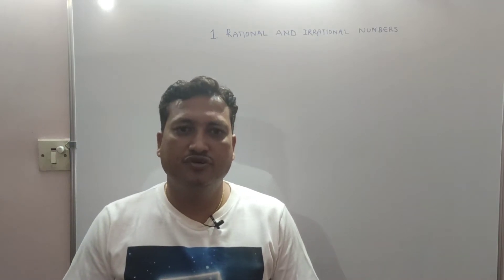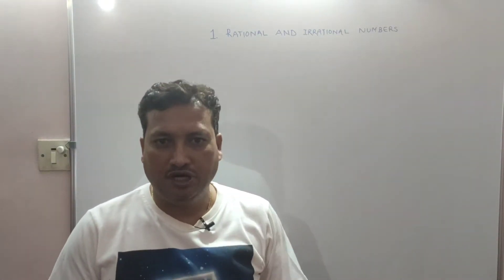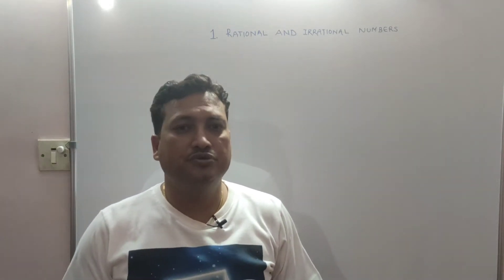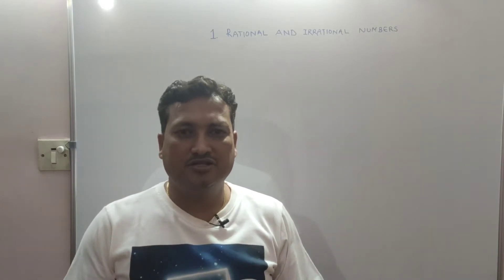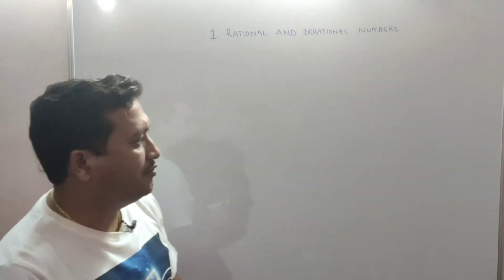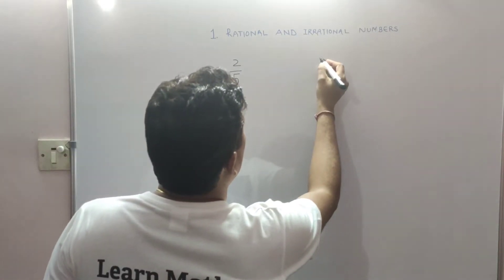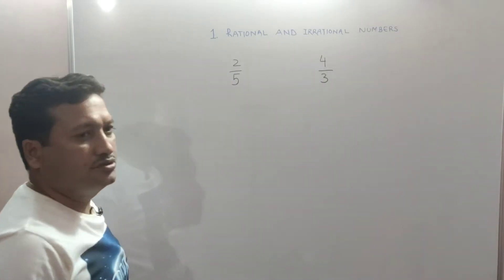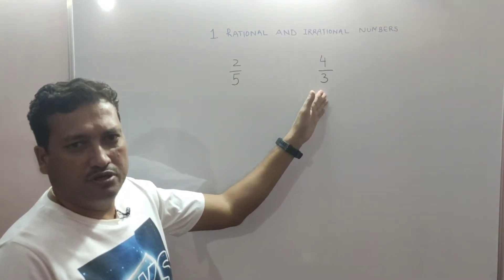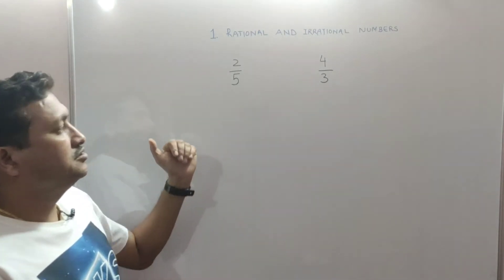In this video we will learn chapter number one: rational and irrational numbers. In the previous video we already explained rational numbers. Today we are going to learn how to find a rational number that lies between two given rational numbers. Suppose we have 2 upon 5 and 4 upon 3. There are uncountable rational numbers between 2 upon 5 and 4 upon 3.